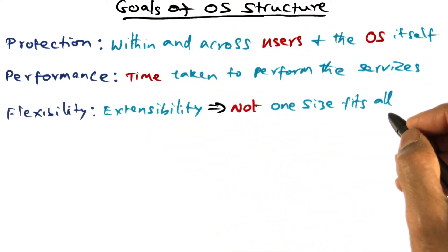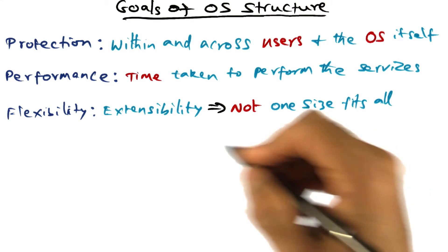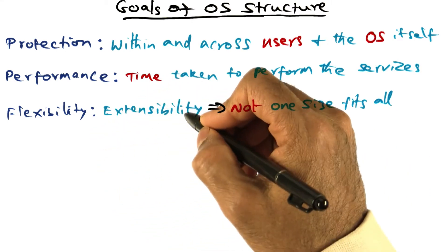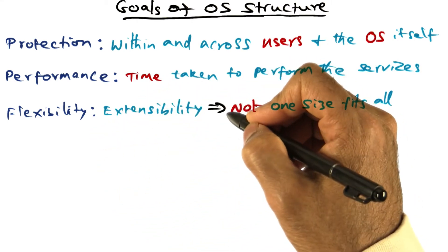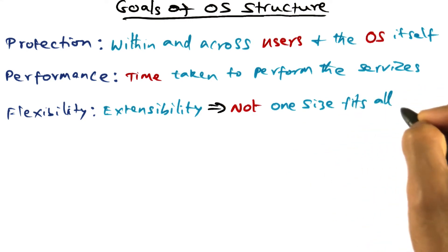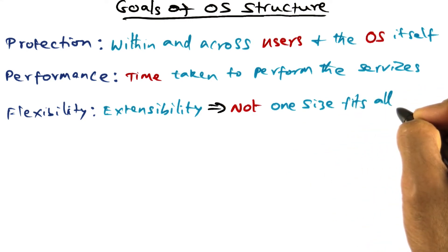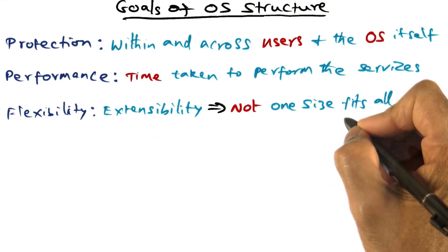Another goal of operating system structure — and in fact one of the goals we will be focusing a lot on in this course module — is flexibility, sometimes also called extensibility. This means that a service provided by the operating system is not one-size-fits-all, but is adaptable to the requirements of the application.